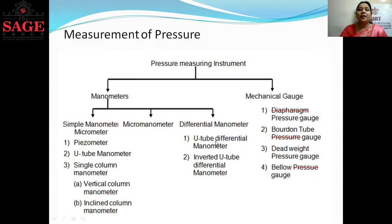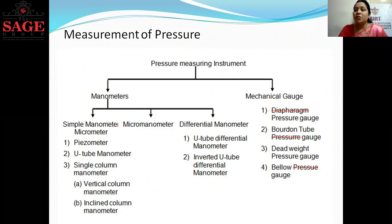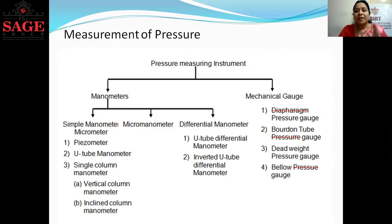Now we come to the measurement of pressure. When we measure pressure, we find the numerical value of pressure using an instrument or gauge. There are two types of pressure measuring instruments: one is the manometer and another is mechanical gauges. In this unit, we will discuss what a manometer is and the types of manometers.